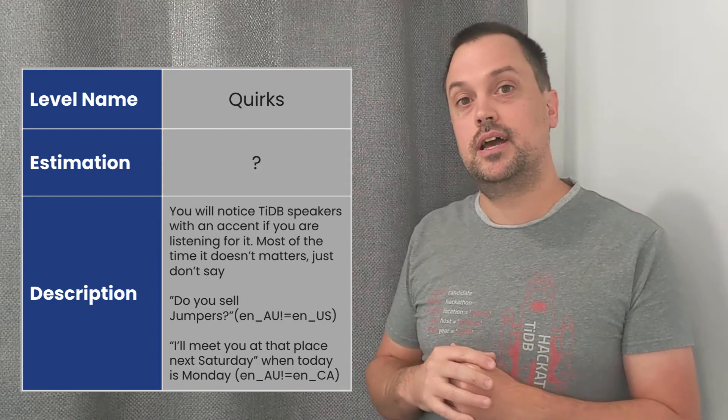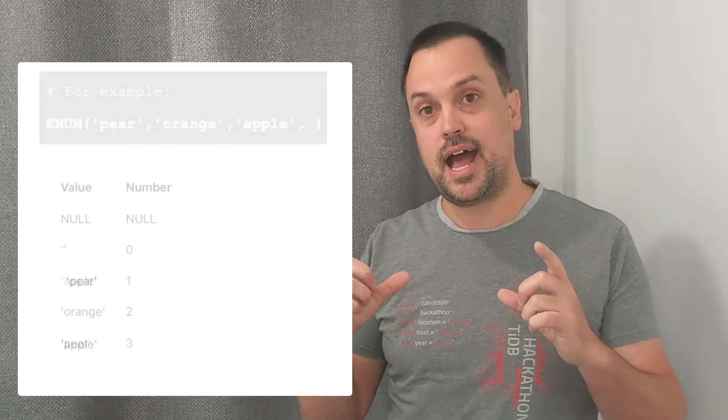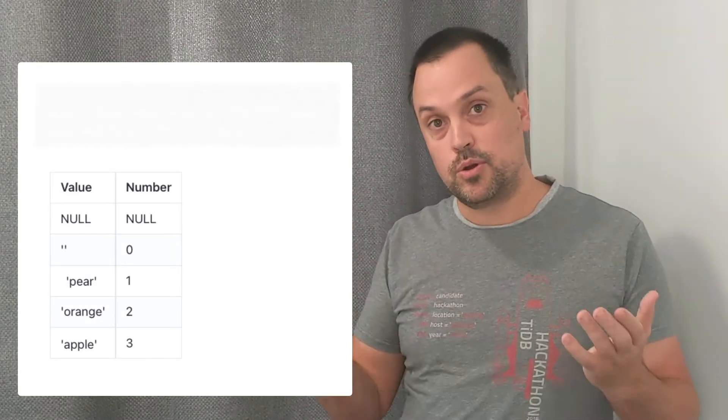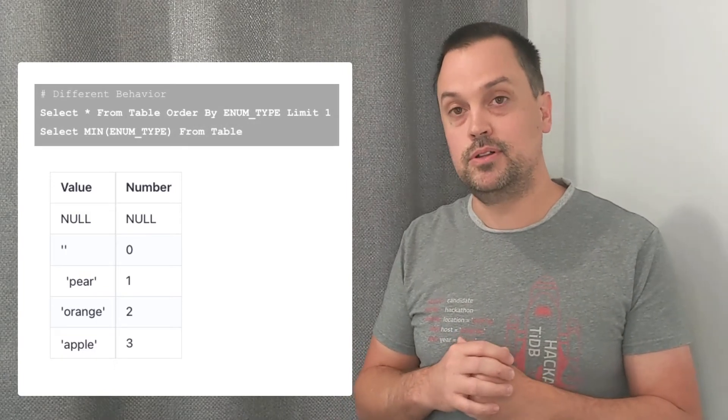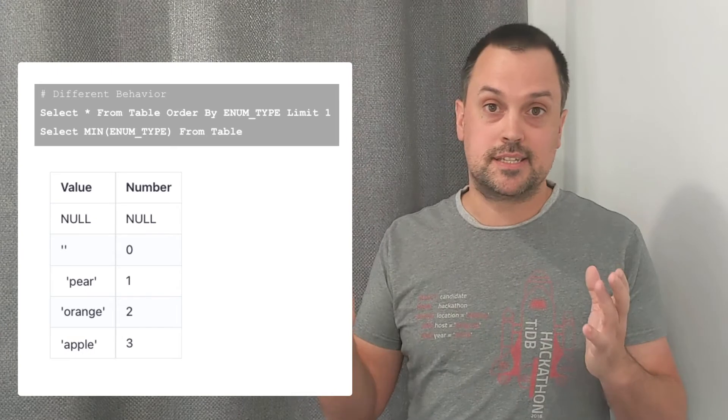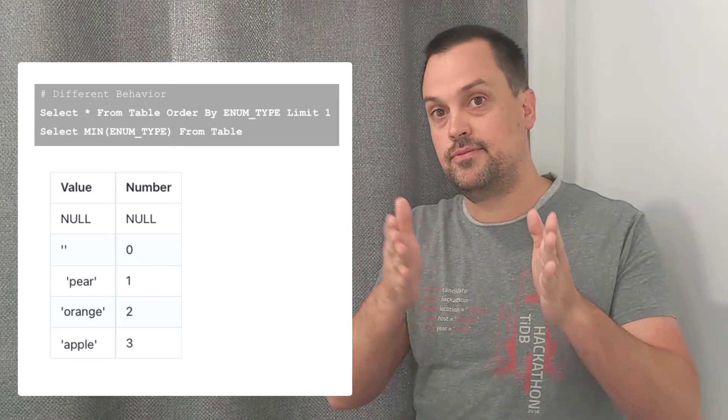For a TiDB example, my favorite one is if you have a table, and the table has the enum data type. If you were to issue a query, select star from table order by enum data type limit 1, you would expect it to have the same results as if you said, select min enum data type from table.